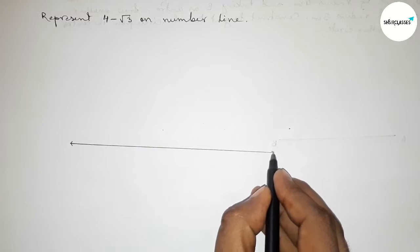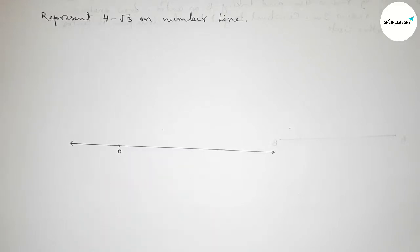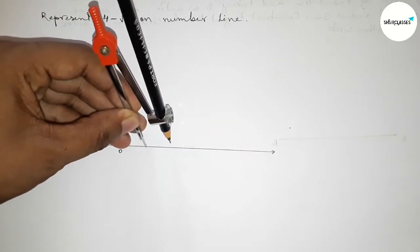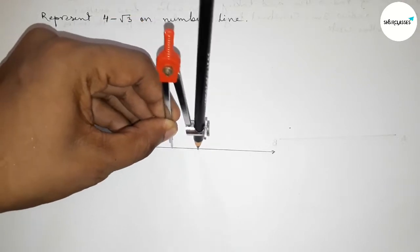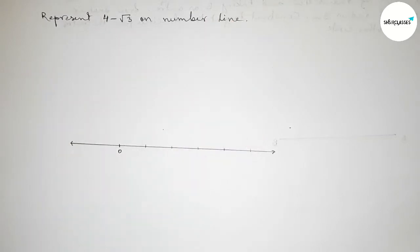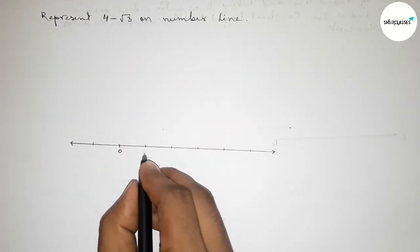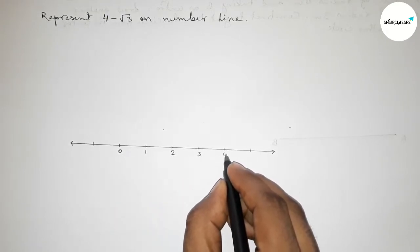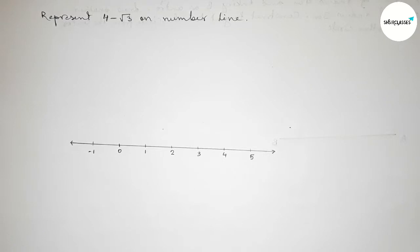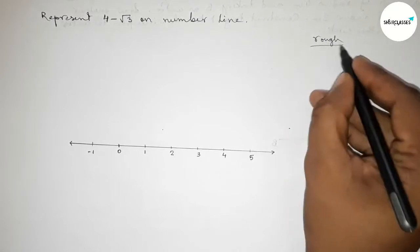Taking arrow marks on both sides, now taking the starting number zero. Using a compass to mark the numbers on the line, with the compass set to one unit length. Constructing the number line and taking points 1, 2, 3, 4, 5 and continuing, and on this side minus 1 and continuing.